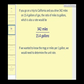If you go on a trip to California and you drive 342 miles on 15.4 gallons of gas, the ratio of miles to gallons, which is a rate, would be written as we see here: 342 miles to 15.4 gallons, or often we just say 342 miles per 15.4 gallons.